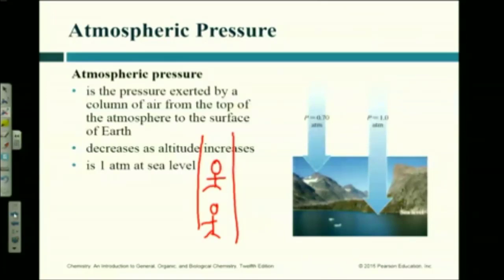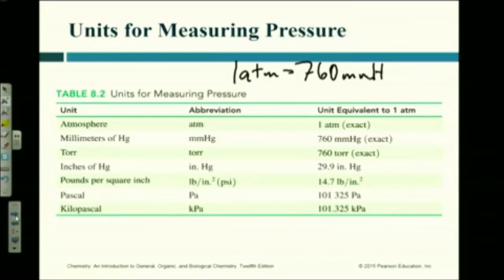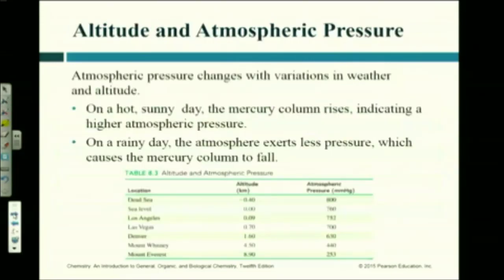Your ears pop and all kinds of weird stuff happens in the mountains, and you have to breathe differently. With all these units of pressure, there's only one conversion you really have to know: one atmosphere equals 760 millimeters of mercury. The rest, if they're in the homework, you can look them up — or if they're on the test, I'll give them to you. You should know that one atmosphere is 760 millimeters of mercury. We're not going to do a whole bunch of conversions with those.